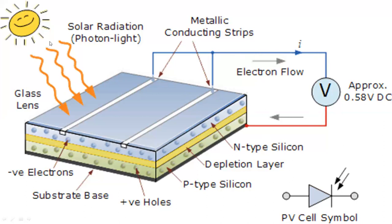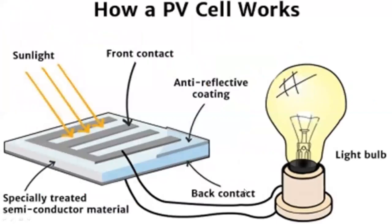This is the solar radiation, which we normally call photon light. And this is how the photovoltaic cell symbol is given. Now let's see how a photovoltaic cell works. We have the sunlight, this is the front contact, and we have an anti-reflective coating. When we connect the negative and positive to a light bulb, we get the bulb glowing.